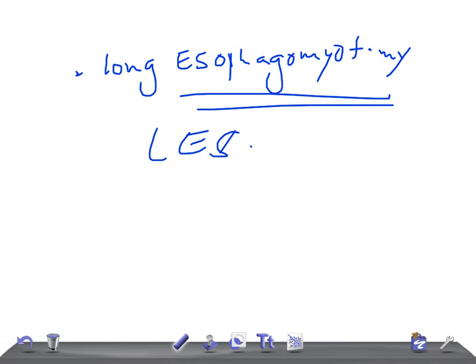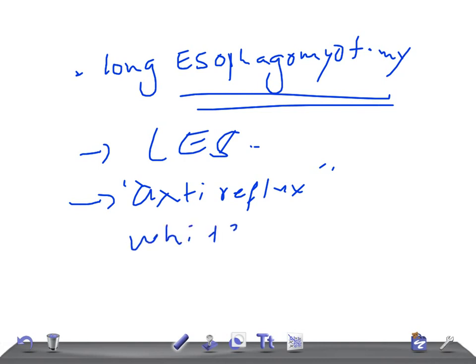Regarding surgery, it is moderately effective with good results in over two-thirds of patients. Best results are obtained in emotionally stable patients with severe disease and without associated lower gastrointestinal problems. Surgery consists of a long esophagomyotomy extending from the arch of the aorta to just below the LES. If significant gastroesophageal reflux is present, an anti-reflux procedure is performed. Diffuse Esophageal Spasm is more common in whites than blacks, more common in females than males, and its incidence increases with age.